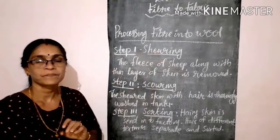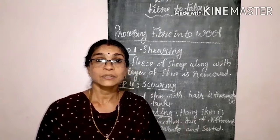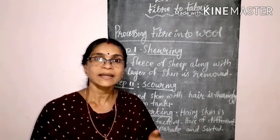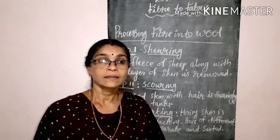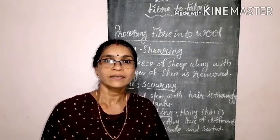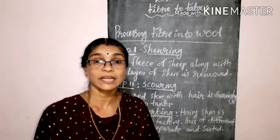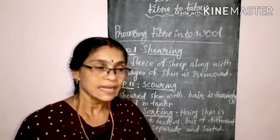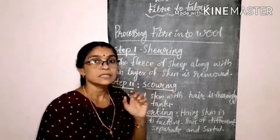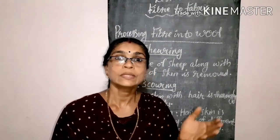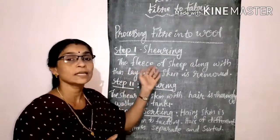The removal of fleece along with the thin layer of skin is called shearing. Many machines are used for shearing, like the machines barbers use to shave and cut hair. Nowadays in barbershops, modern machines can do the work very fast and effortlessly. Similarly, machines are also used for removing the fleece of sheep. Normally the fleece is removed during summer season so the animals are not harmed, because they can survive the summer season without a thick coat of fur.